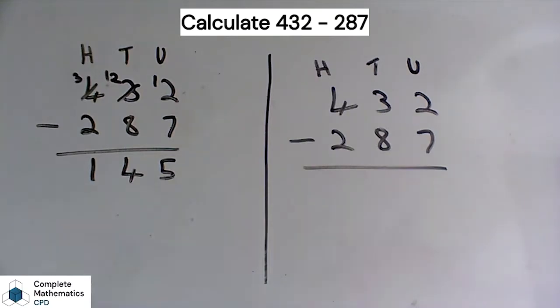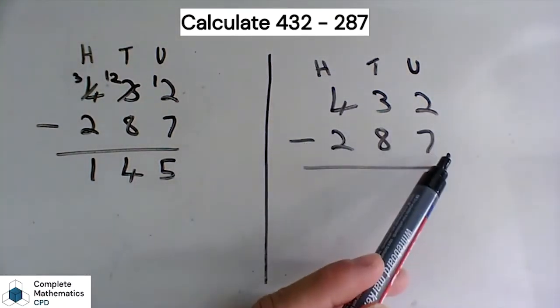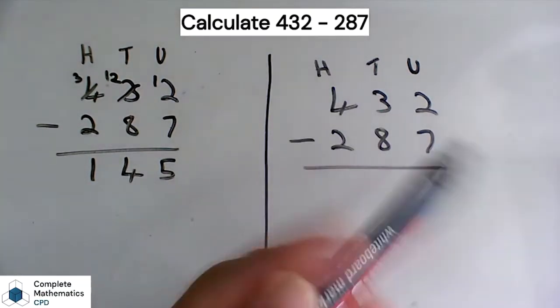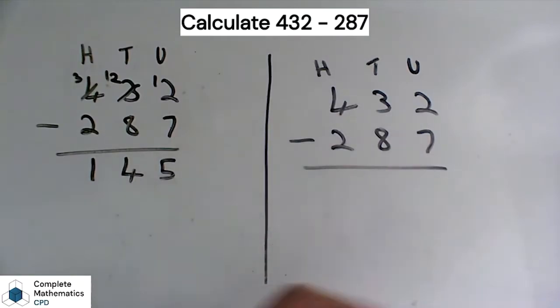Now what you quite often hear in the classroom at this point is 2 minus 7, and pupils will say things like you can't do that, sir. Well of course you can do 2 minus 7. 2 minus 7 is negative 5.